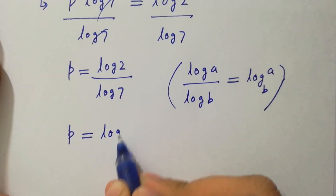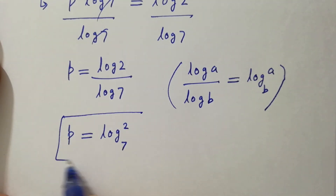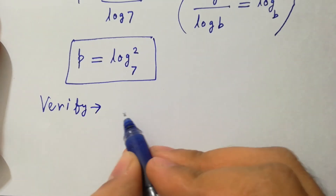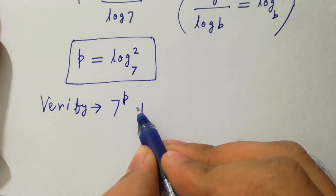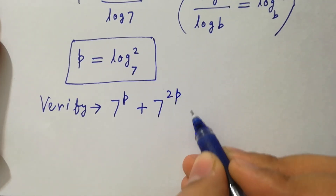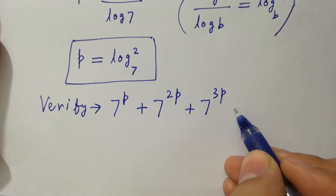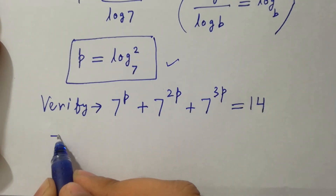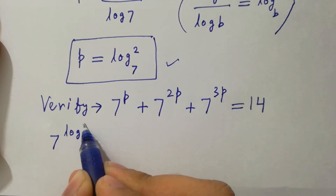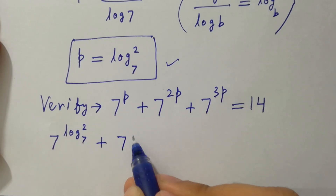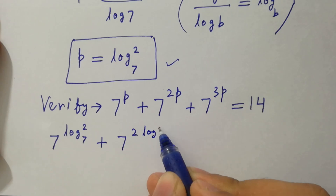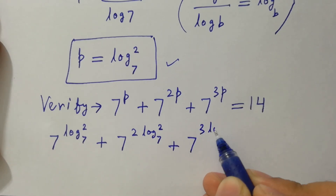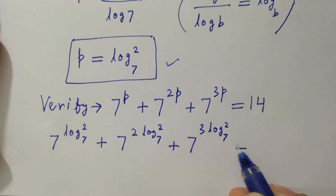Now let's verify. Putting the value of p: 7 to the power p equals log 2 to the base 7. So 7 to the power 2p equals 2 times log 2 to the base 7, and 7 to the power 3p equals 3 times log 2 to the base 7, all summed equal to 14.